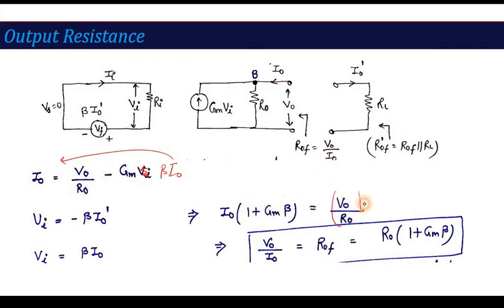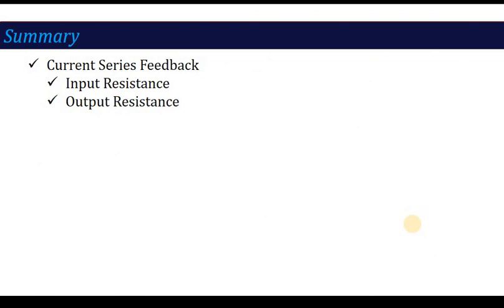So the output resistance is r0 multiplied by the factor (1 + gm*beta). The key concept: for series feedback at the output, output impedance increases; for parallel feedback, it decreases. In this lecture we have covered current series feedback. In the next lecture we will cover the next configuration. Keep practicing these two lectures together, as they will help you easily understand the upcoming topics. Thank you.